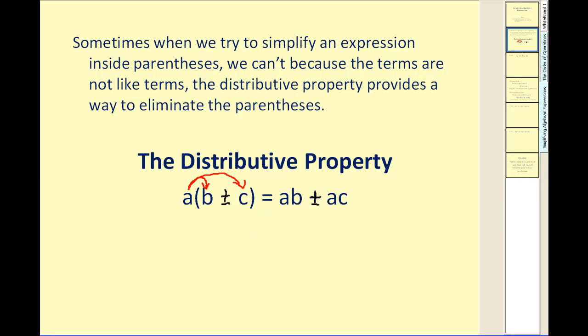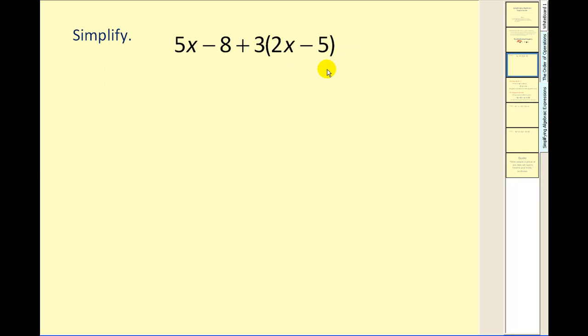So let's take a look at how this works. If we're asked to simplify this expression, notice that we're supposed to start inside the parentheses, but we cannot combine 2X minus 5 because they're not like terms. But we can still clear the parentheses by distributing this 3. So let's give it a try.